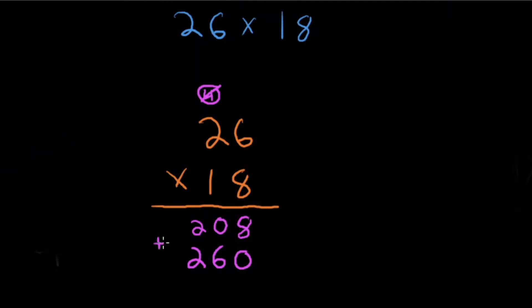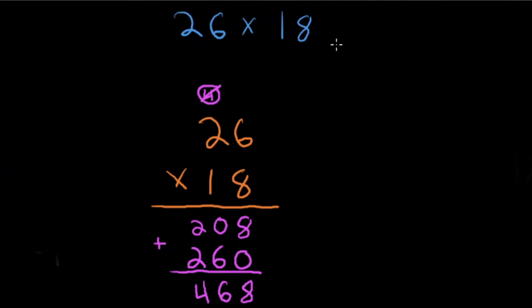The last thing we need to do is add these two sets of numbers to get our final product. Don't go too fast here — slow down and take your time. Add the ones: that gives us eight. Add the tens: that gives us six. Add the hundreds: that gives us four. And we get a final answer of 468. Watch this problem over again if you need to — ask yourself where you're making mistakes, what doesn't make sense, then let's take a look at problem number two.